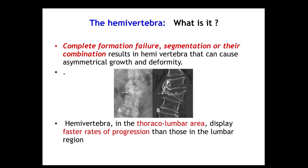A hemivertebra is a complete failure of formation or segmentation of a vertebra, resulting in a triangular shape that deforms the spine as the person grows. Hemivertebrae in the thoracolumbar area display a faster rate of progression than those in the lumbar region.